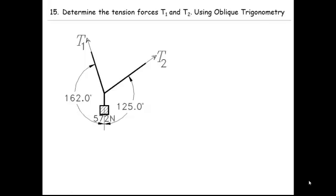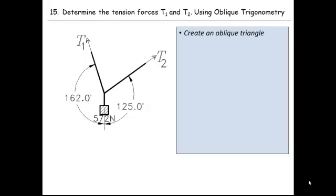So here we are trying to solve our tension problem again, but using oblique trig. Our game plan is going to try and find an oblique triangle. Let's gray out our diagram and overdraw our forces.